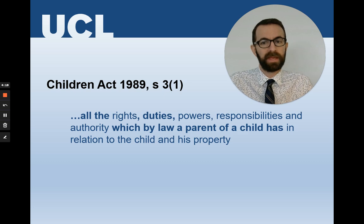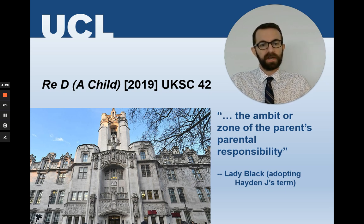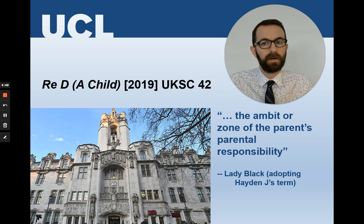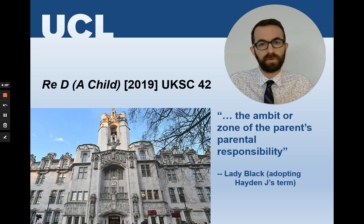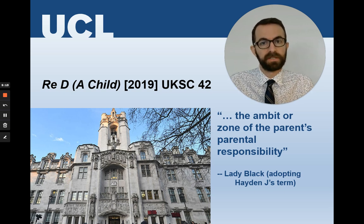It's also unclear what the outer limits of parental responsibility are in any particular context. This is what the court sometimes refers to as the ambit or zone of a parent's parental responsibility — a phrase initially used by Mr Justice Hayden and picked up by Lady Black in her judgment in Re D in 2019. Delineating the edges of the zone of parental responsibility is really very difficult. One of those challenges is that there are a great many rules about what parents can do that are expressed by reference to effectively normal societal standards — there's no fixed definition; it's based on what other people do.